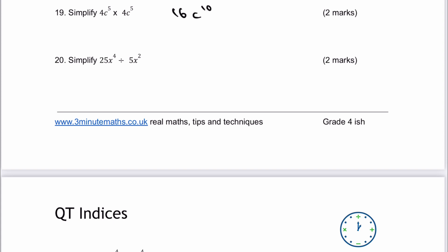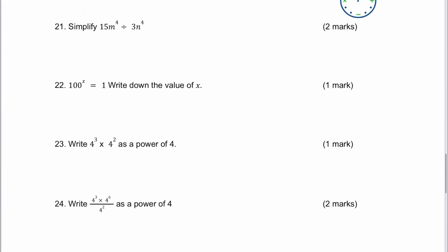The same division principle applies as before — we can write this as a fraction. 25x to the 4 divided by 5x to the 2: 25 and 5 can be divided by 5, giving 5. Then x to the 4 divided by x to the 2 is 4 take away 2, which is x squared. Number 21: 15n to the 4 over 3n to the 4 — dividing by 3 gives 5n to the 4 over n to the 4. That's the answer to question 21.